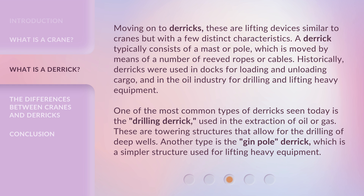Moving on to derricks, these are lifting devices similar to cranes but with a few distinct characteristics. A derrick typically consists of a mast or pole, which is moved by means of a number of reaved ropes or cables. Historically, derricks were used in docks for loading and unloading cargo, and in the oil industry for drilling and lifting heavy equipment. One of the most common types seen today is the drilling derrick, used in the extraction of oil or gas — towering structures that allow for the drilling of deep wells. Another type is the gin pole derrick, which is a simpler structure used for lifting heavy equipment.